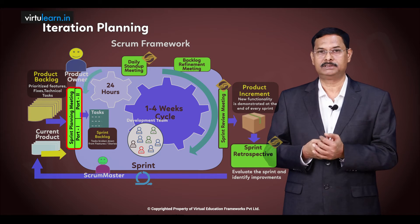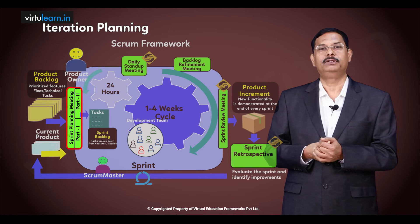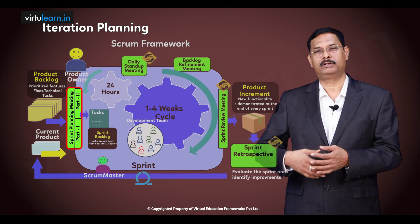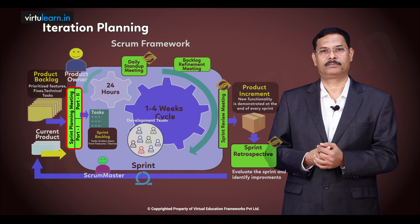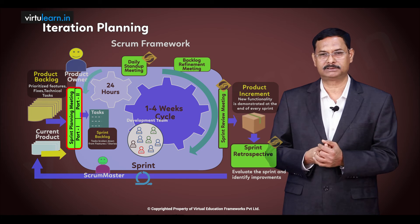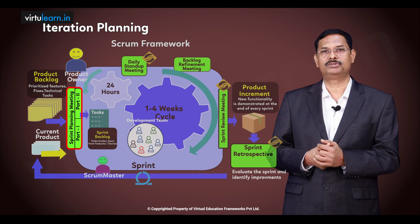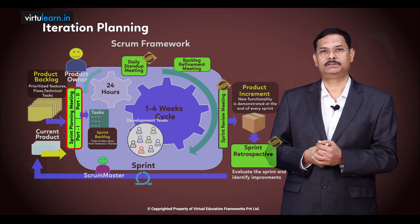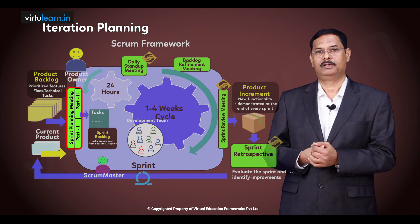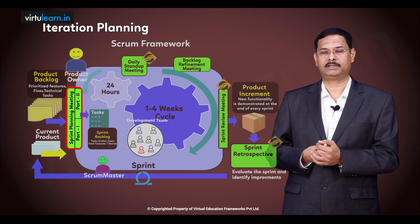Iteration planning has two parts. In part one, we select the stories that we want to implement in this particular iteration. In part two, we break down each of these stories into respective tasks. The list of these tasks is known as the sprint backlog, which is the output of the sprint planning process. The list of all the features and business goals are nothing but the iteration goals.